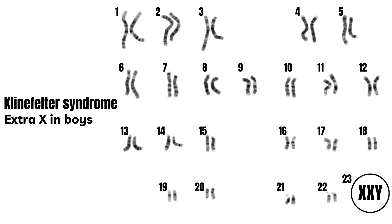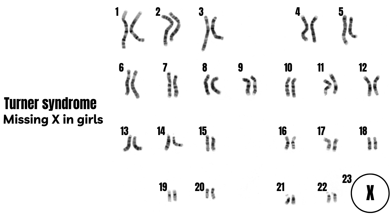Four: Klinefelter syndrome, caused by an additional X chromosome in boys, and may cause slowed puberty and infertility. Five: Turner syndrome, caused by a missing or damaged X chromosome in girls, causing heart and neck problems as well as a decrease in height.